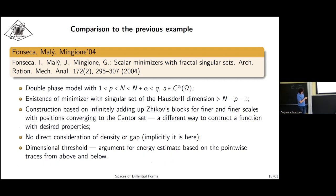Now I compare to the previously known example by Fonseca, Maly, and Mingione. They studied the double phase model but with this dimensional threshold. They showed the existence of minimizers with singular set of Hausdorff dimension arbitrarily close to N minus P. This is based on infinitely adding up works for finer and finer scales, but basically gives the same function as we have. They did not consider directly the problem of density or gap, but implicitly it is here. They had this dimensional threshold because they use energy estimates based on pointwise traces from below. For this you need to have P greater than dimension.